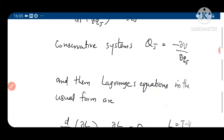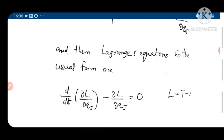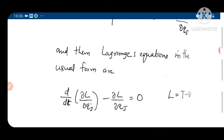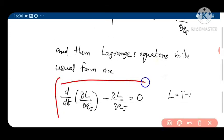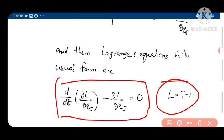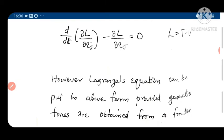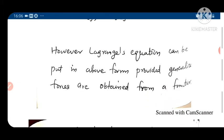The Lagrange's equation in the conservative case becomes: d/dt of (∂L/∂q̇_j) minus ∂L/∂q_j = 0, where L is T minus V — T is the kinetic energy and V is the potential energy. This form applies for conservative systems where L = T − V.